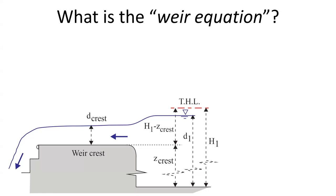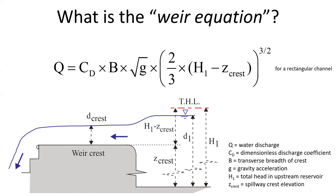What is the Weir Equation? The Weir Equation, with here an expression for a rectangular channel, is an equation linking the volumetric discharge Q as a function of the reservoir elevation and the weir geometry.